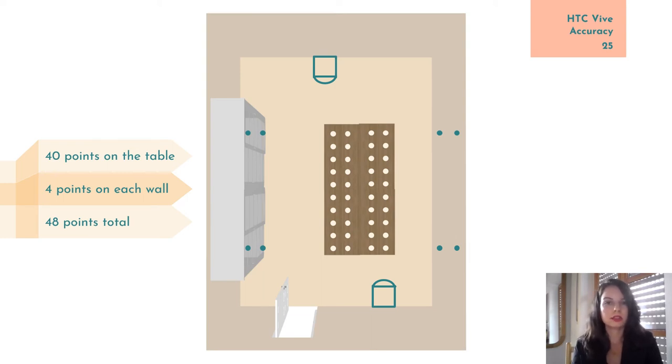If they were identical, Procrustes analysis would yield no errors, so any disparity after the alignment must be due to the measurement errors of the HTC Vive.